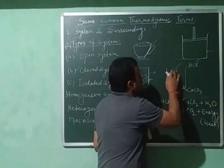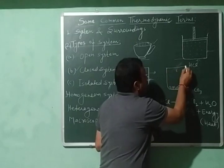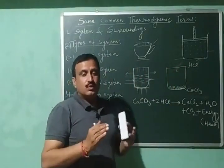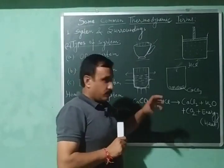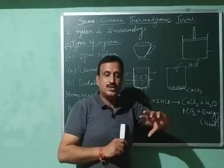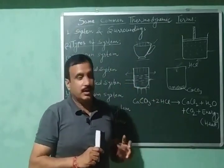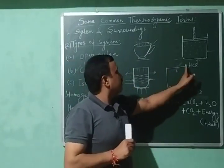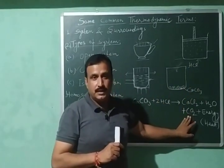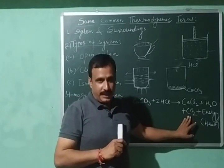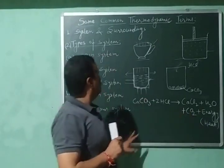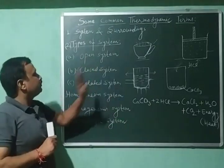Similarly, if the calcium carbonate and hydrochloric acid reaction is carried out in a closed container with conducting walls, then heat can go outside the system, meaning energy can be exchanged with the surroundings. But because the container is closed, carbon dioxide cannot escape — so matter cannot be exchanged. Only energy is exchanged, making this also an example of a closed system.